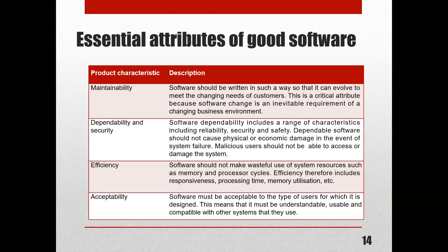The first attribute is maintainability. The software should be written in such a way that it can evolve to meet the changing needs of customers. Whenever a customer wants any kind of changes, you should be able to provide maintenance for that software. This is a critical attribute because software changes are an inevitable requirement of a changing business environment.